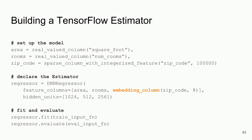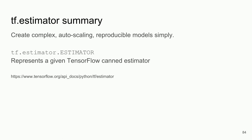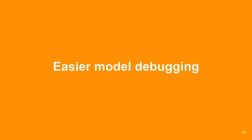Estimator summary: create complex, auto-scaling, reproducible models simply. The syntax is tf.estimator.NameOfEstimator — so for example, tf.estimator.DNNRegressor. I've also included the documentation for all the other estimators that are soon going to become available.